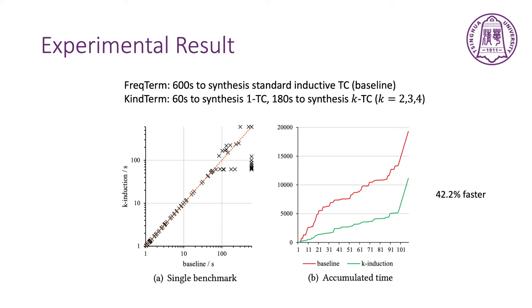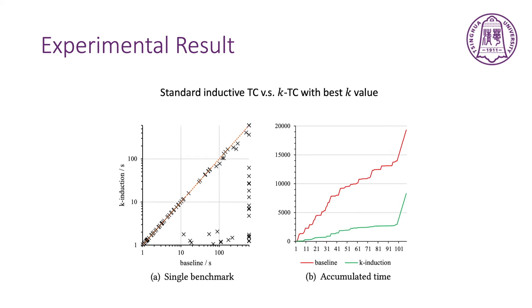We choose Frequent Terms as the baseline. It uses 600 seconds to synthesize standard TC. Our tool can't terms uses 16 seconds to synthesize one TC, and uses 118 seconds to synthesize K-inductive TC, with K being 2, 3, or 4. The total time is also 600 seconds. As we can see, our tool performs better than Frequent Terms. It can solve more benchmarks, and is 42% faster than Frequent Terms.